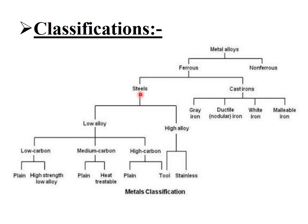Metallic materials are categorized as ferrous and non-ferrous. Ferrous material, based on percentage of carbon, can be divided into steel and cast iron. Steel has up to 1.5% carbon, while cast iron has more than 1.5% carbon. Steel based on chemical composition can be low alloy or high alloy, with alloying elements such as chromium, molybdenum, tungsten, vanadium, cobalt, and nickel. Low alloy steel has minimal alloying elements and can be categorized as low, medium, and high carbon steel.